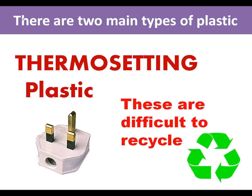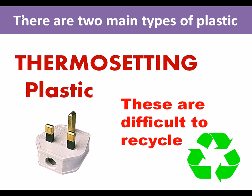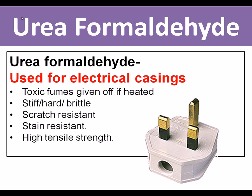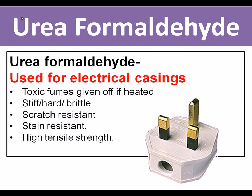First, we're going to look at thermosetting plastics. The first thermosetting plastic is urea formaldehyde, which is used for electrical casings. If heated it gives off toxic fumes. It's quite a brittle plastic — it will crack — but it is scratch and stain resistant and quite strong. It's generally used for plugs and electrical sockets because if it heats up, it stays rigid.